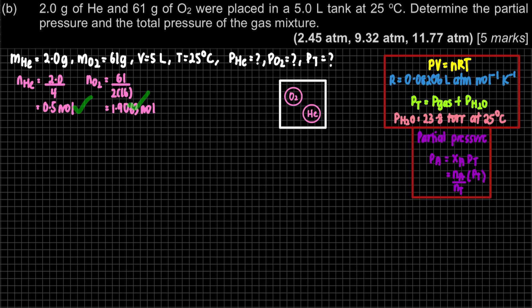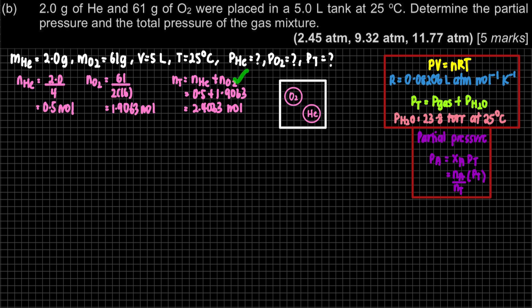Here are the number of moles for helium and oxygen. Using the mole fraction formula, we divide the mole of each gas by the total moles — so we add up both moles to get the total. We need to find total pressure first, because the partial pressure formula requires pressure total. Using PV = nRT, when we are talking about total pressure, the number of moles here must be the total number of moles.